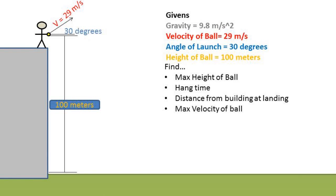You've got a ball, and you're on top of a building. You throw the ball off the building at 29 meters a second at a 30 degree angle. What is the max height, hang time, distance from the building at landing, and max velocity?